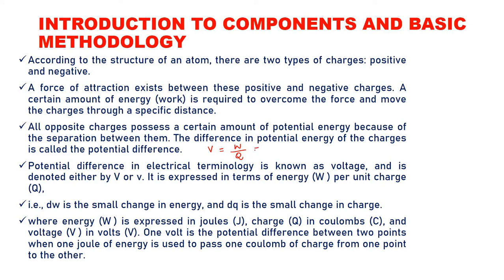What is voltage? Voltage is the work done per charge — it is the energy required to move a charge a specific distance. The unit of energy is joule and the unit of charge is coulomb, so voltage is joule per coulomb, or volts. One volt is the potential difference between two points when one joule of energy is used to pass one coulomb of charge from one point to another.